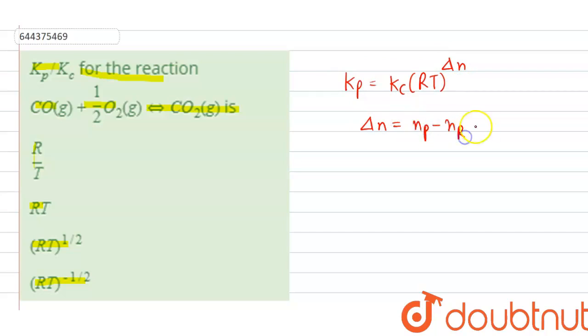So the value will be 1 minus 3 by 2, as the result is minus 1 by 2. So if we take Kc and divide, then we get the relation Kp by Kc equals RT raised to the power minus half.